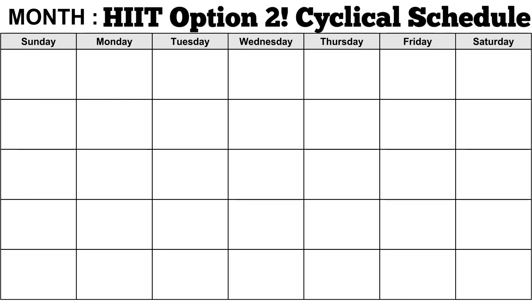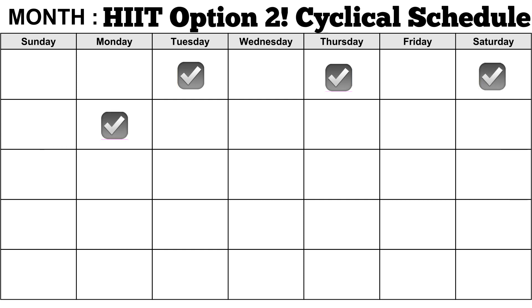Option two for HIIT is an alternating or cyclical schedule. For week one, you'll do Tuesday, Thursday, Saturday HIIT training. Then for week two, you'll do Monday, Wednesday, Friday, Sunday. Then you skip a day and do Tuesday, Thursday, Saturday again, then skip Sunday and do Monday, Wednesday, Friday, Sunday.